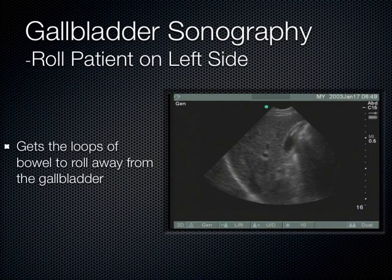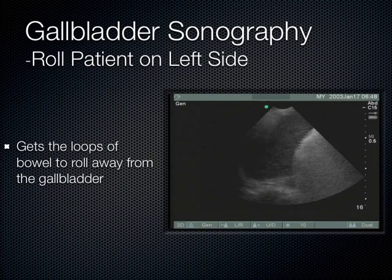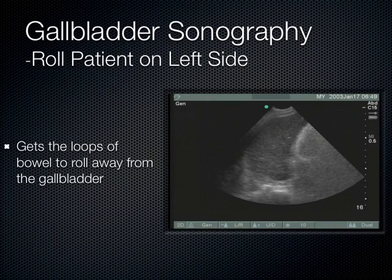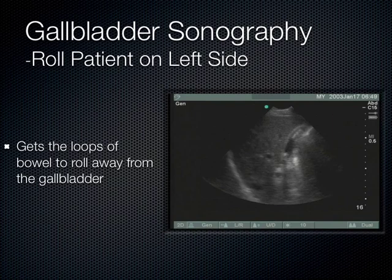What you need to do is roll the patient on their left side — that will get the loops of bowel, especially the duodenum, to fall out of the way most of the time. If that doesn't work and the patient can tolerate it, have them drink a glass of water and come back in 5 to 10 minutes. The water will make its way into the duodenum, pushing out the air that was there. Water — the friend of ultrasound — and now we can see the gallbladder.